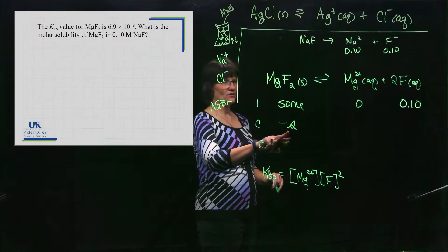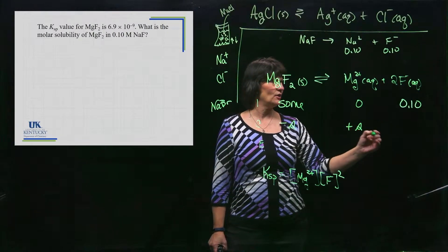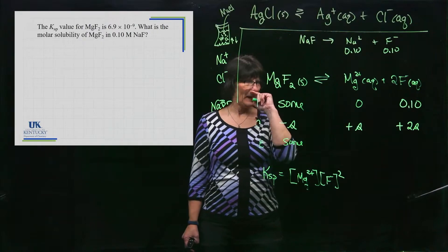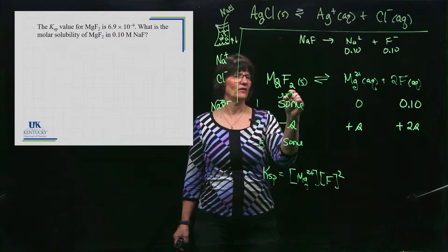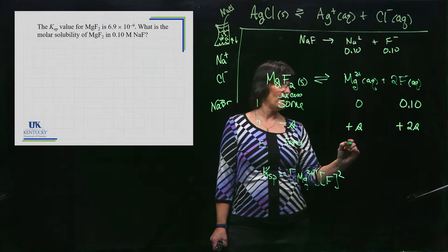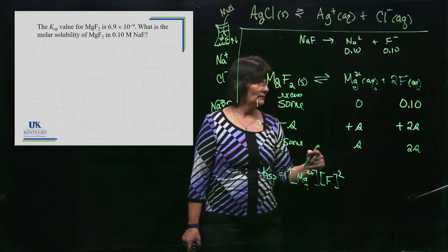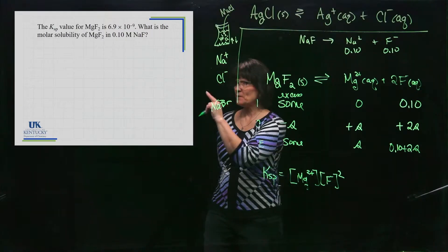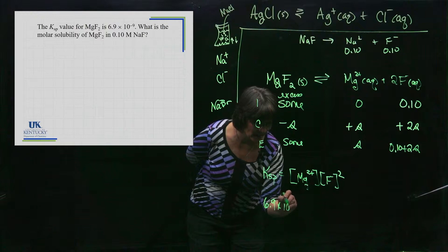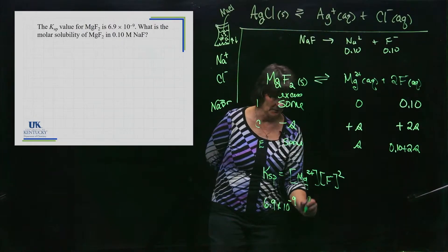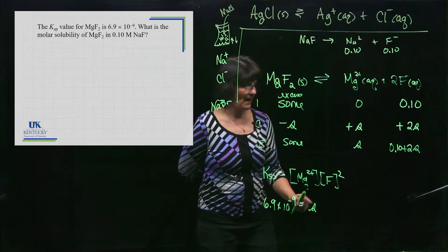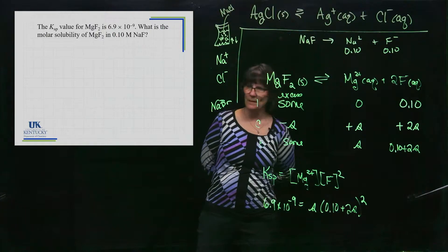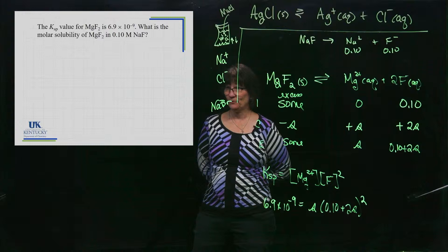It's only the change line where this reaction is taking place. I want to know the solubility — how much dissolves — I'll call it s. On the change line I produce s for Mg²⁺ and 2s for F⁻. So for the equilibrium line I have s for Mg²⁺ and 0.1 + 2s for F⁻. I still have excess solid. Now we're ready to come to our expression: Ksp = [Mg²⁺][F⁻]².